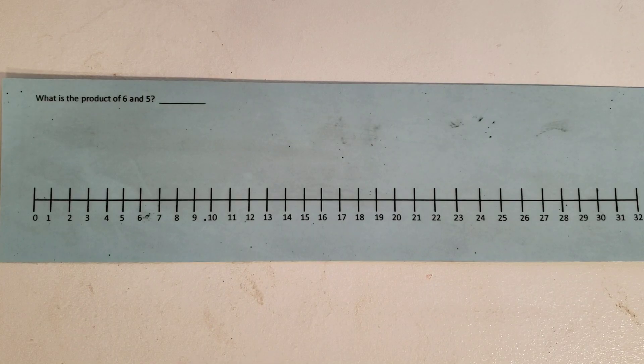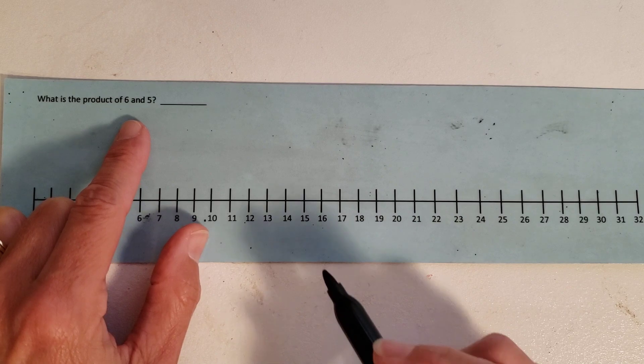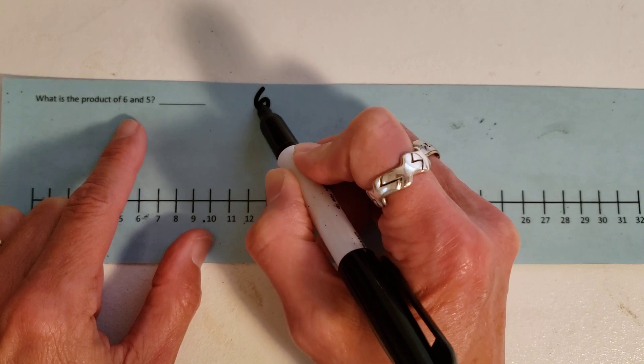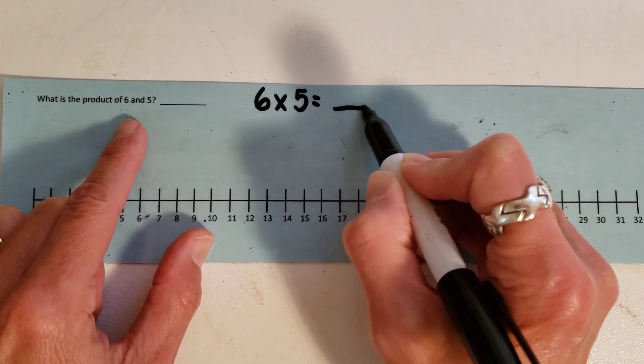Okay, we're going to go ahead and take a look at this one. It says what is the product of five and six? Remember, product means that we're trying to figure out a multiplication problem. So we're trying to figure out six times five. That's our job today.